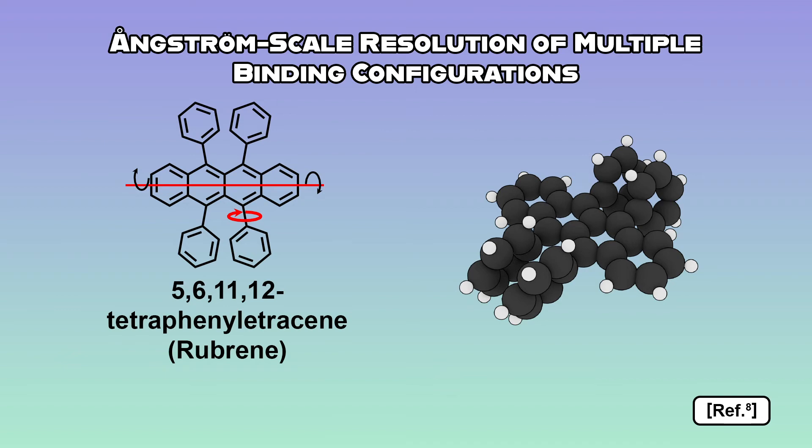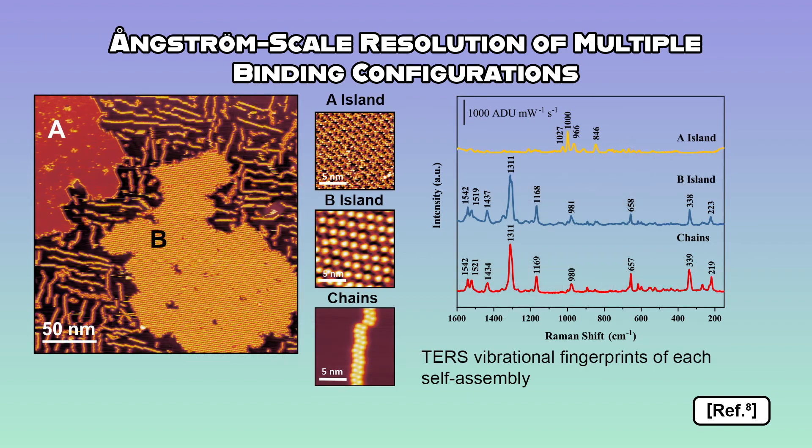We studied rubrene, an organic semiconductor with an exceptionally high carrier mobility as a thin-layer single crystal, on silver-100. Rubrene consists of a tetracene backbone with two phenyls on each side. STM imaging revealed the formation of three unique supramolecular assemblies: two types of molecular islands, as well as two molecule-wide molecular chains.